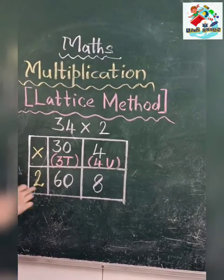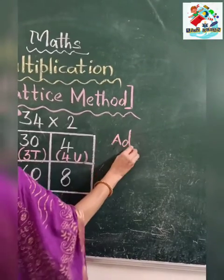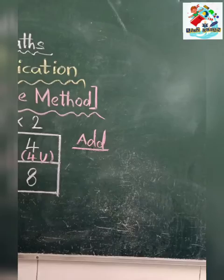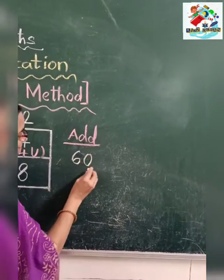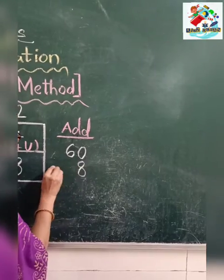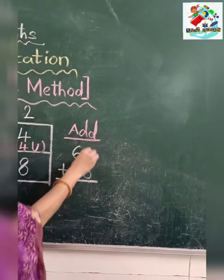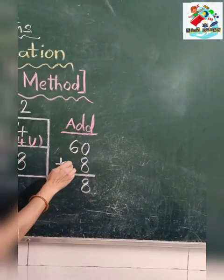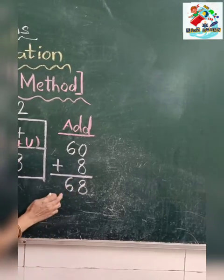After this, you are going to add these numbers like this. Say 60 plus 8. That means in the ones place, nothing is there, so the answer will be 8. And in the tens place, 6, so the answer is 6.